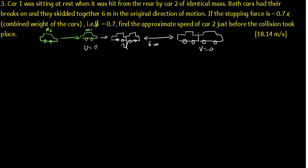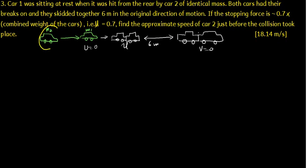That is mu, which is the coefficient of friction, 0.7. Find the approximate speed of car 2 just before the collision. So you have got this second car, it is moving. It hits this car which is at rest.